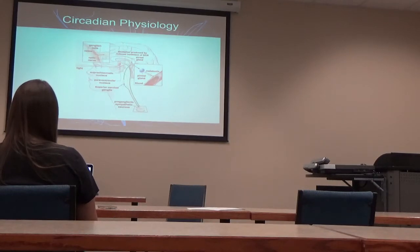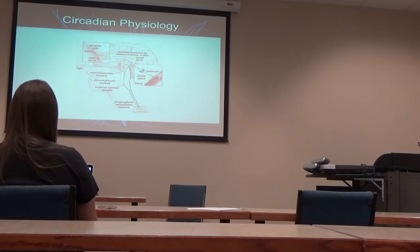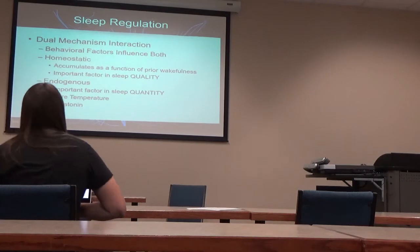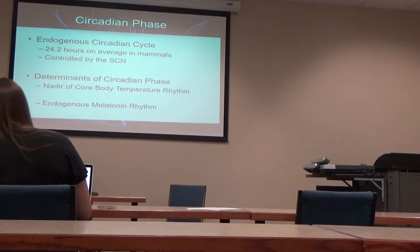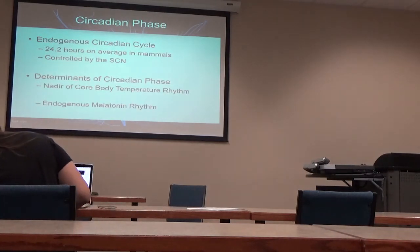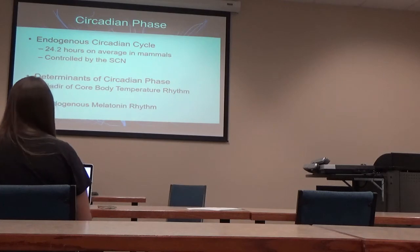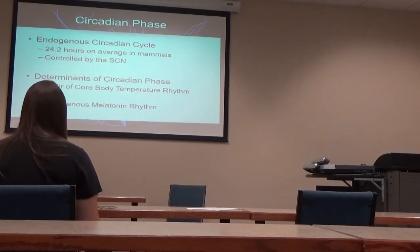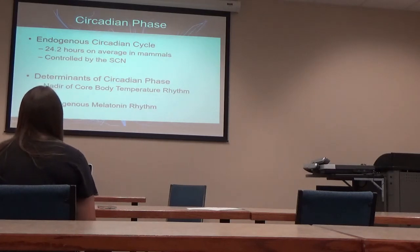We've already talked about melatonin, the suprachiasmatic nucleus, the pineal gland. We've talked about the homeostatic and endogenous cycle. Our endogenous circadian cycle is really based on about 24.2 hours — it's not exactly 24 hours, and it's controlled by part of the suprachiasmatic nucleus.